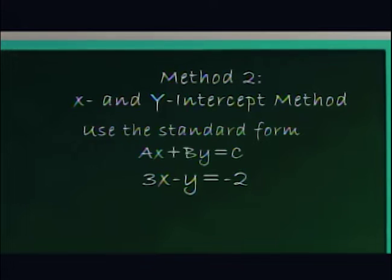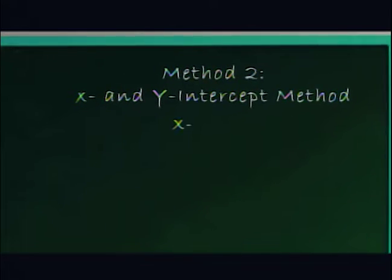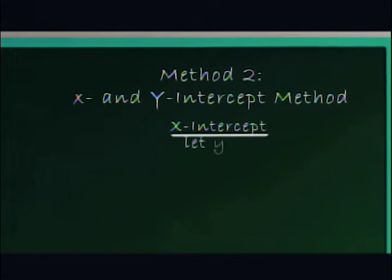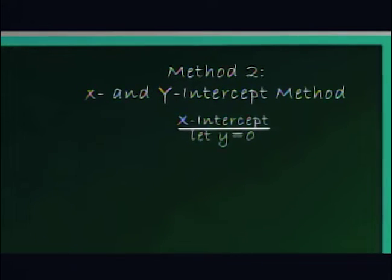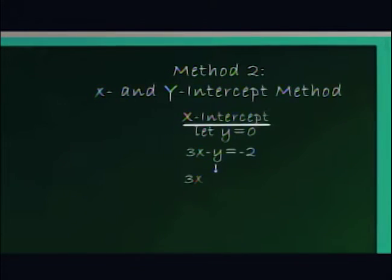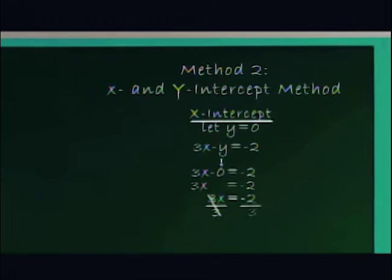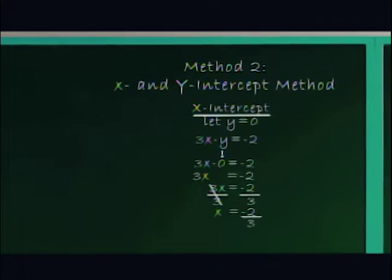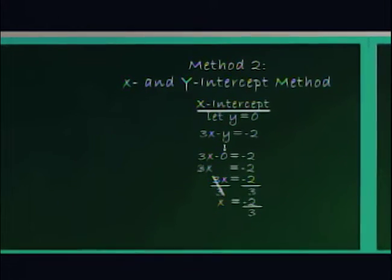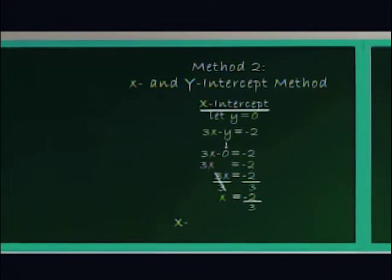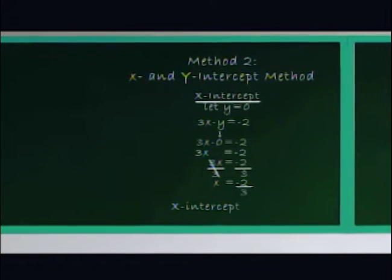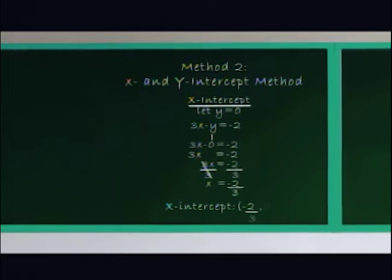To find the x-intercept, we shall solve for the value of x when y is 0. To do this, we shall substitute 0 to y, and we will get x equals negative 2 thirds. Therefore, the x-intercept is negative 2 thirds, 0.